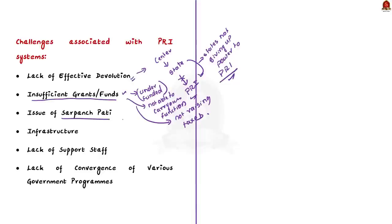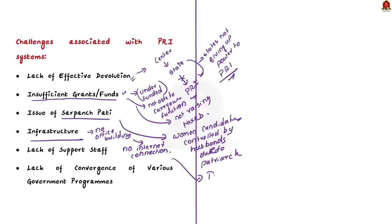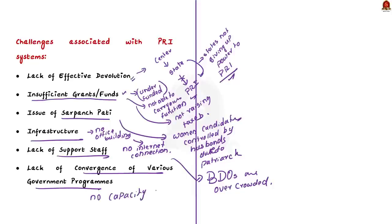The next issue is Sarpanchpati. Even though there is reservation for women, the effective political power and decision-making is wielded by the husbands of the elected women representatives. This phenomenon, referred to as Sarpanchpati, is still prevalent mainly due to gender bias, women's illiteracy, and a patriarchal society. The next issue is infrastructure. Some Gram Panchayats do not have their own building and share space with schools, Anganwadi centers, and other government buildings. Even where internet connection exists, it is often not functional. For simple tasks like data entry, panchayat officials have to visit block development offices, making those offices excessively crowded and delaying their work. Other issues faced by Panchayati Raj institutions include lack of support staff, lack of convergence of various government programs, and lack of capacity building.